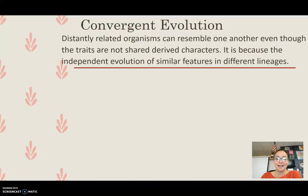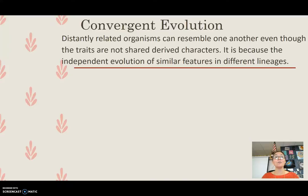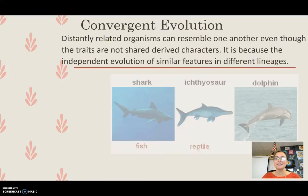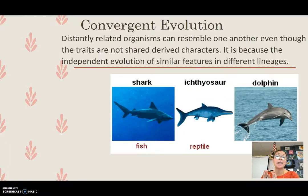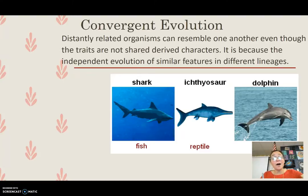Convergent evolution is fascinating. In convergent evolution, animals evolve to look similar even though they don't have a recent common ancestor. For example, sharks, ichthyosaurs, and dolphins all look very similar, and you might hypothesize they share a recent common ancestor with that body shape. However, one's a fish, one's a reptile, and one's a mammal. They don't have a recent common ancestor with this streamlined body shape — instead, they've all evolved to look similar because of similar habitats and high-fitness phenotypes. This body shape evolved independently three or four times.